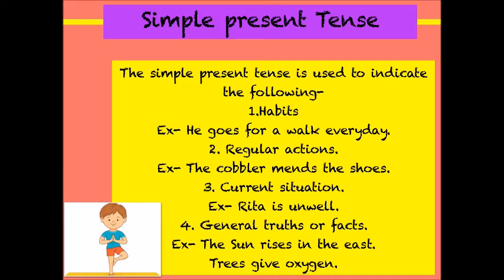Simple present tense is used to indicate the following. First is habits — for example, he goes for a walk every day. Second is regular actions — for example, the cobbler mends shoes. Third is current situation — for example, Rita is unwell. And fourth, general truths or facts — for example, the sun rises in the east, trees give oxygen, etc. So these all are examples of simple present tense.